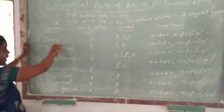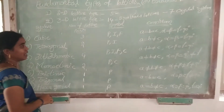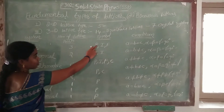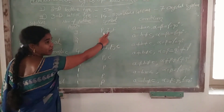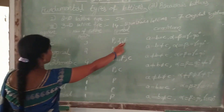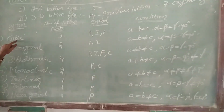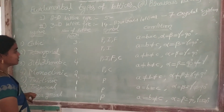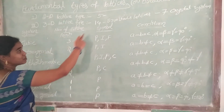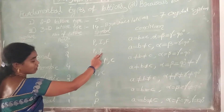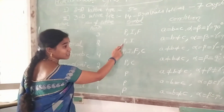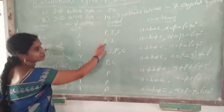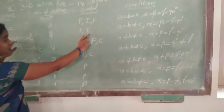Cubic crystal system has three types of Bravais lattices: primitive cubic crystal system, body centered cubic crystal system, and face centered cubic crystal system. Tetragonal crystal system has two types of Bravais lattices: P and I. P means primitive, so primitive tetragonal crystal system, and body centered tetragonal crystal system.